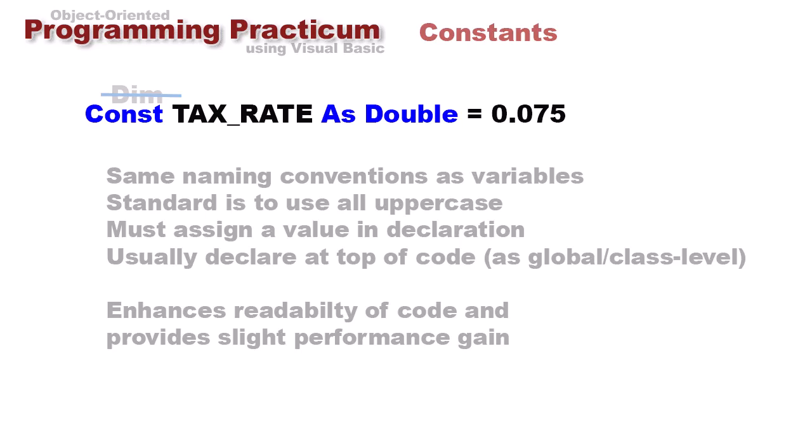The other difference with a constant versus a variable is we must assign the value when we declare the constant. I cannot say const tax rate as double on one line and the next line say tax rate equals 0.075. I have to do that all together. And usually we declare our constants at the top of our code in what we call global or class-level variables. We will talk more about that in a future lesson.